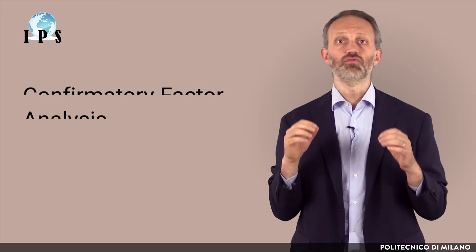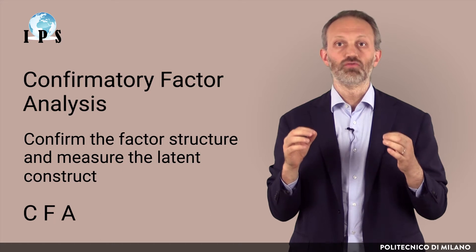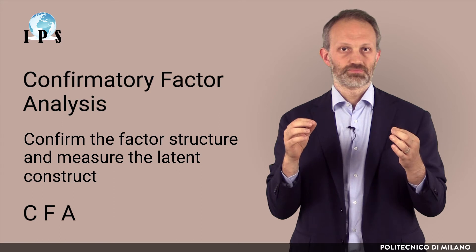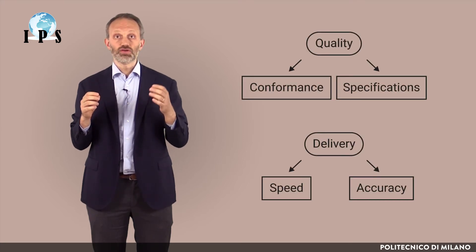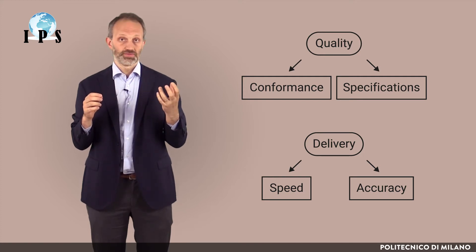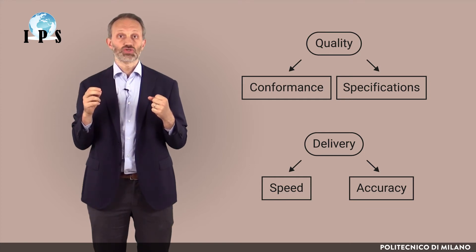If instead we already have a clear expectation about which variables should be grouped into a single factor, we should use confirmatory factor analysis, which aims exactly to confirm the factor structure and measure the latent construct. In IPS, the questions were designed in this way. For example, improving conformance and specifications were aimed at measuring quality, while improving speed and accuracy were aimed at measuring delivery.